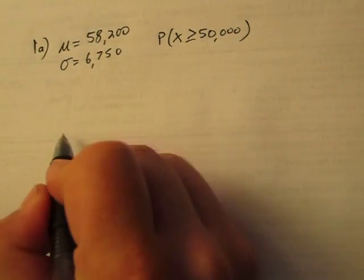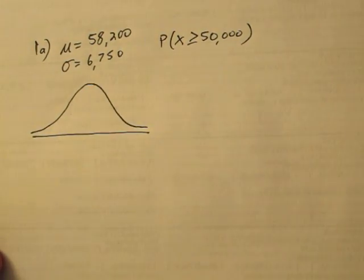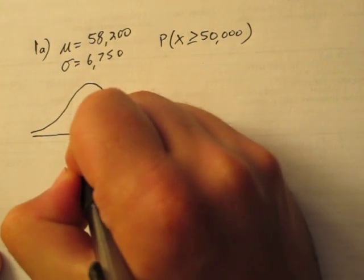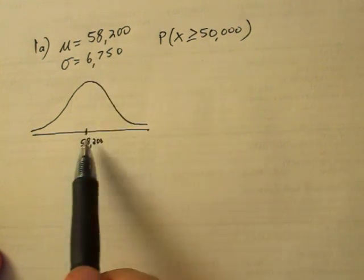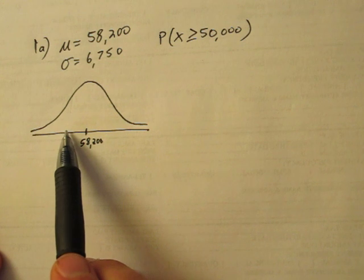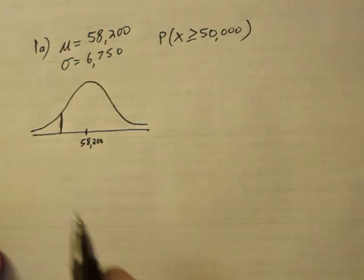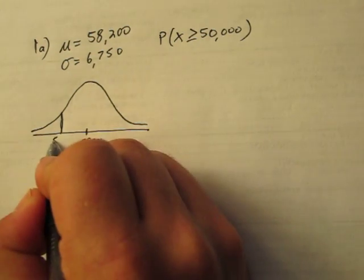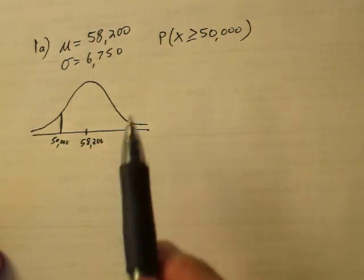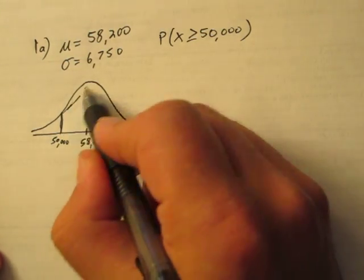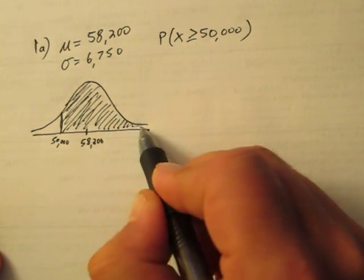I suggest drawing a bell curve here to represent the normal probability density function, and you can label it with the mean right in the middle. One standard deviation, that's about $7,000 or so, would get us to about $51,000 here. Our $50,000 is going to be just beyond one standard deviation away from the center. Since we're trying to find the probability of at least $50,000, we're interested in this area on our probability density function.